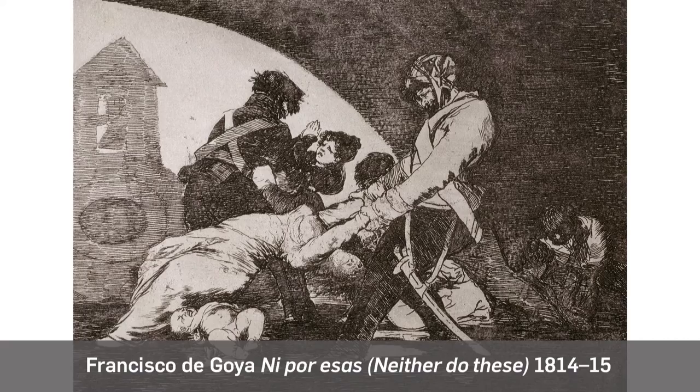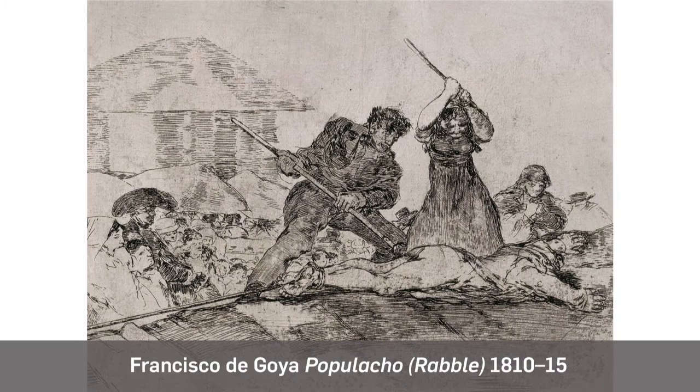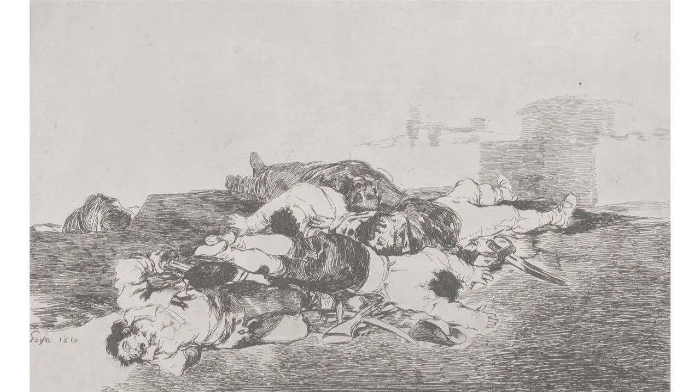Goya's second and most subsequently celebrated series of prints, The Disasters of War, were not even published in the artist's lifetime. He commenced work on the series around 1810 at the age of 64, two years after the 2nd of May uprising in Madrid, which initiated years of bitter and violent guerrilla warfare between French troops and Spain's ill-prepared forces in what became known as the Peninsular War.